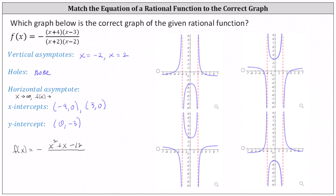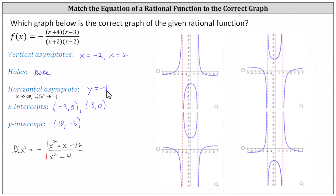One way to determine the horizontal asymptote is to compare the degree of the numerator and the degree of the denominator. Because both degrees are two, the horizontal asymptote equals the ratio of the leading coefficients, which gives us the opposite of one divided by one, equaling negative one. This indicates as x approaches infinity, f of x approaches negative one, and y equals negative one is the horizontal asymptote.